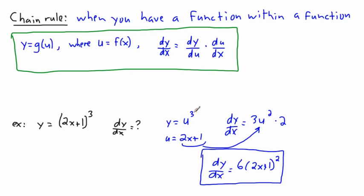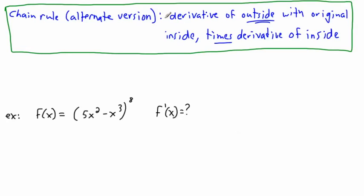Going back to the past example: the outside function was u cubed, so its derivative is 3 times something squared — derivative of the outside — but instead of u I put in the original inside, which is 2x+1. Then multiply by the derivative of the inside. This is what I say to myself: derivative of outside with original inside, times derivative of inside. I used to quiz my students on this in the hallway!